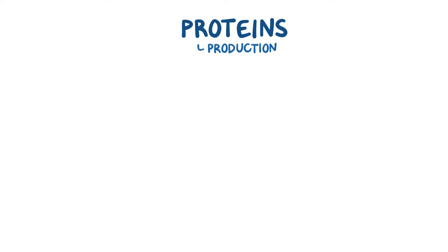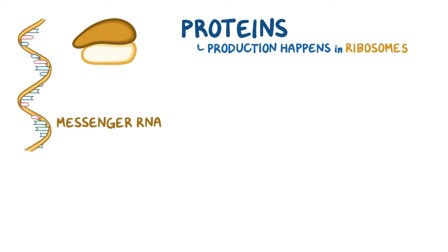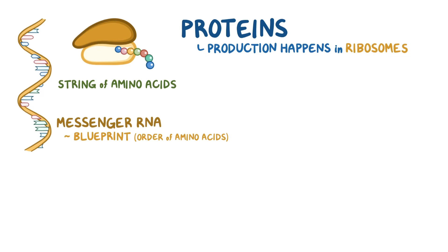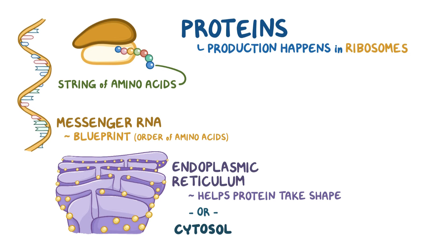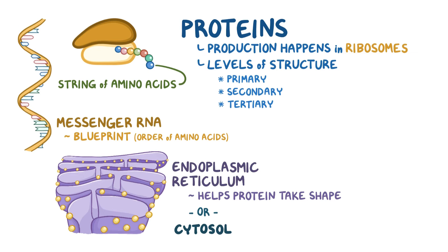Protein production happens in cellular structures called ribosomes, which use messenger RNA—essentially a blueprint that tells the ribosome exactly the order of amino acids needed. At this point, the protein is just a growing string of amino acids. As it grows, it's either being injected into another organelle called the endoplasmic reticulum, which will help the protein take shape, or it's being translated directly into the cytosol. Proteins have multiple levels of structure: primary, secondary, tertiary, and quaternary, creating a hierarchy.